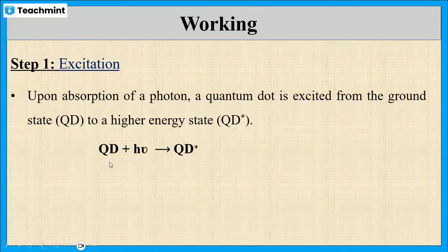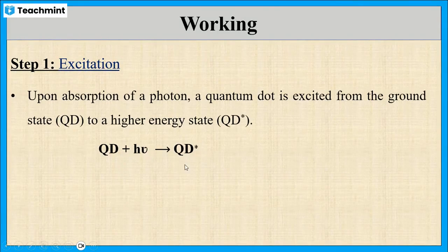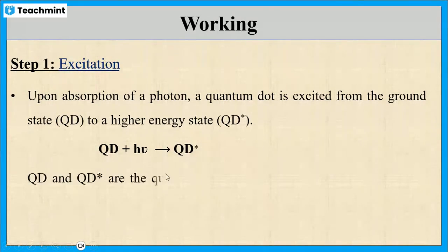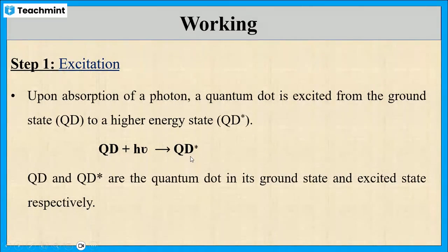Upon absorption of a photon (hν), the quantum dot absorbs the photon and gives QD*, where QD is the quantum dot in the ground state and QD* is the quantum dot in the excited state.